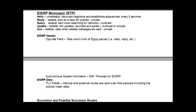In the EIGRP messages, or RTP protocol, you have the EIGRP header, which has a field called the opcode field that tells which kind of EIGRP packet — hello, reply, or whatever — and these will have a different number. It also has the AS number or process ID number sent in that header. In the EIGRP data area, there are TLV fields, and those carry the internal and external routes. Subnet mask data is also sent over the EIGRP data fields.